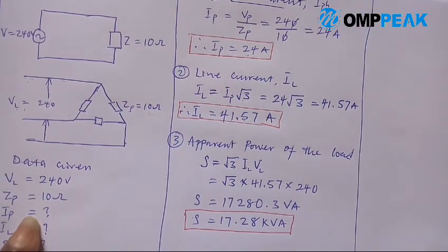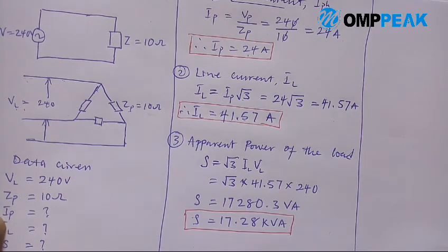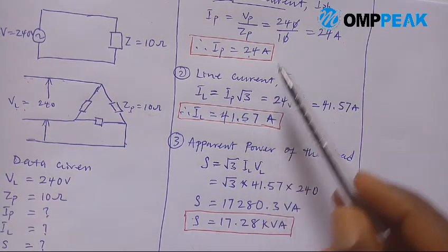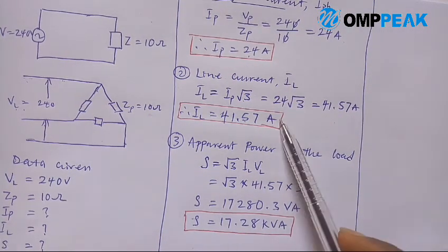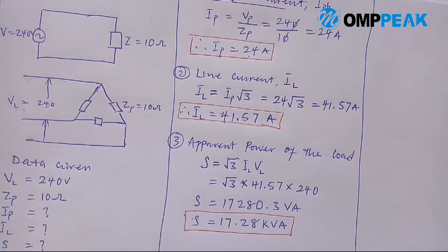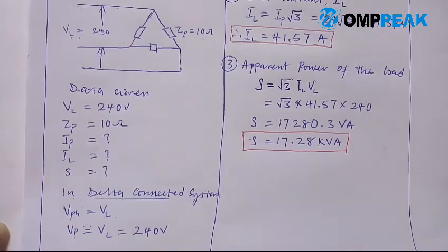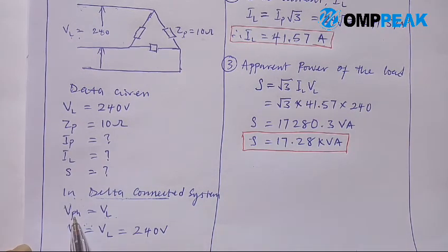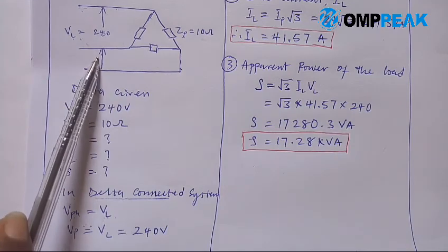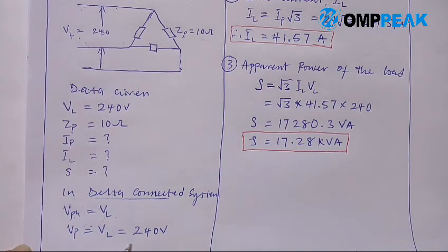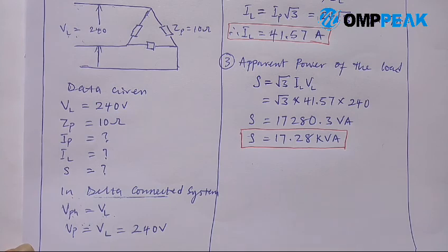So that is the solution for this question. We determined the phase current, the line current, and the apparent power of the load. Don't forget: in a delta connected system, Vph (phase voltage) is the same as line voltage. Here our line voltage was 240 volts, so phase voltage is also 240 volts. Keep that in mind. Thank you for watching — please like, subscribe, and share.